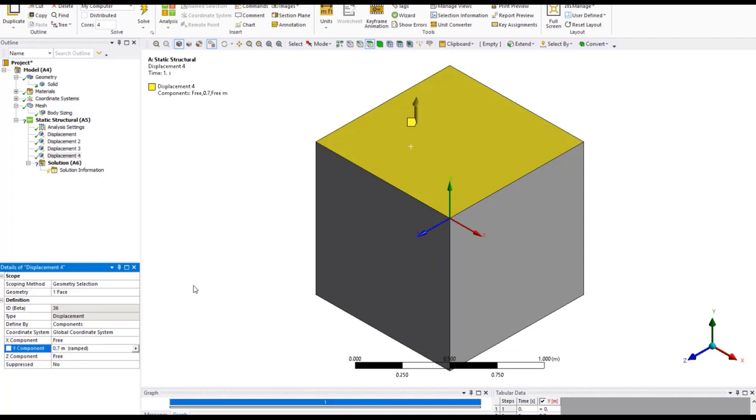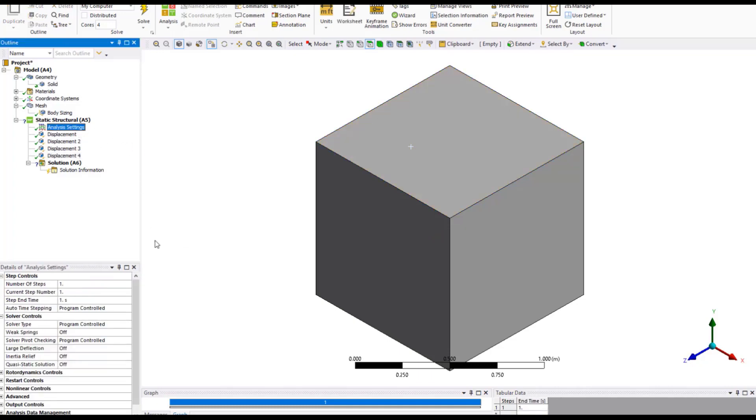This completes defining the loads and boundary conditions. Next, go to analysis settings and set large deflections to on. Hyperelastic models are non-linear in nature and therefore they use large deflection theory. Next, set the time stepping to off and set the number of sub-steps to 10. A typical simulation using hyperelastic material models may benefit from using auto-time stepping, but due to the simplicity of the model, we may turn it off. This completes the model setup. Go ahead and solve the model.